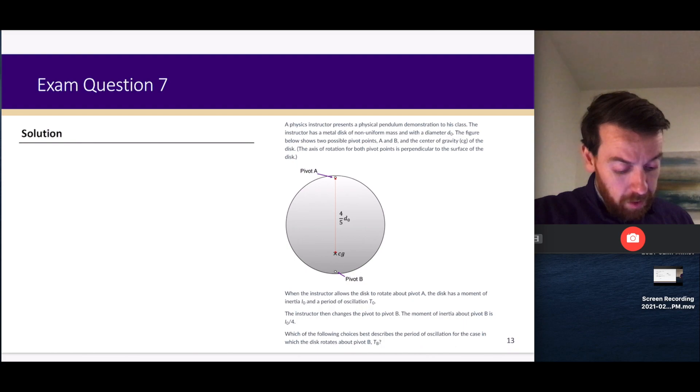The instructor then changes to pivot B. The moment of inertia about pivot B is I₀/4, but I don't specifically tell you that the distance d is one-fifth of d₀—that's the key part of solving the problem. Which of the following choices describes the period of oscillation when it rotates about pivot B? How do we compare the periods from each pivot point?